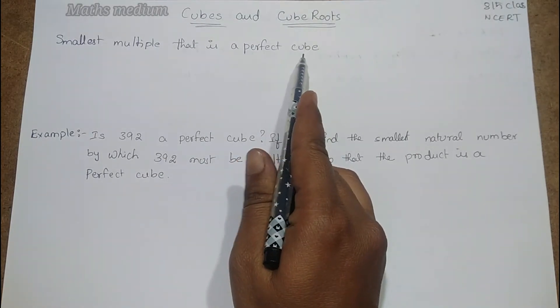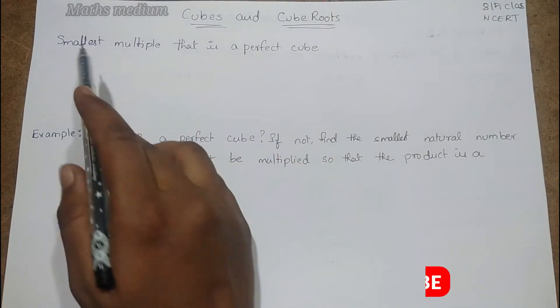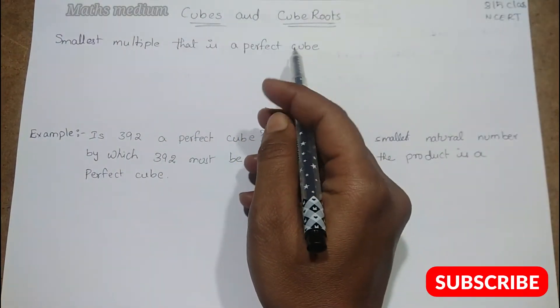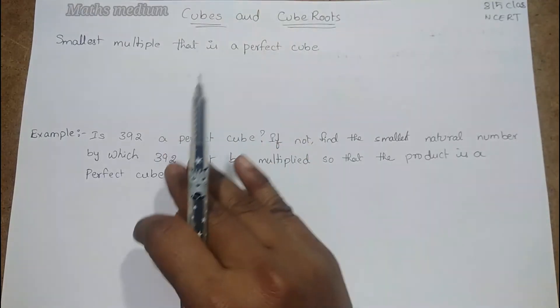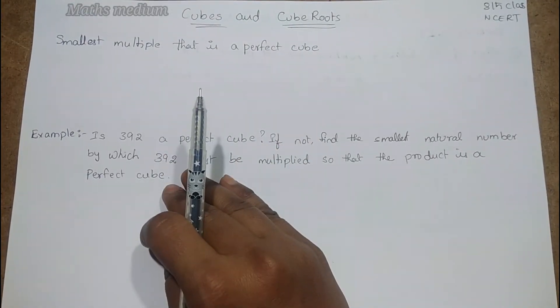In earlier videos we already discussed about cubes, but here how to find the smallest multiple that is said to be a perfect cube. Let's see the introduction and I will explain through example problems so you will get better understanding.